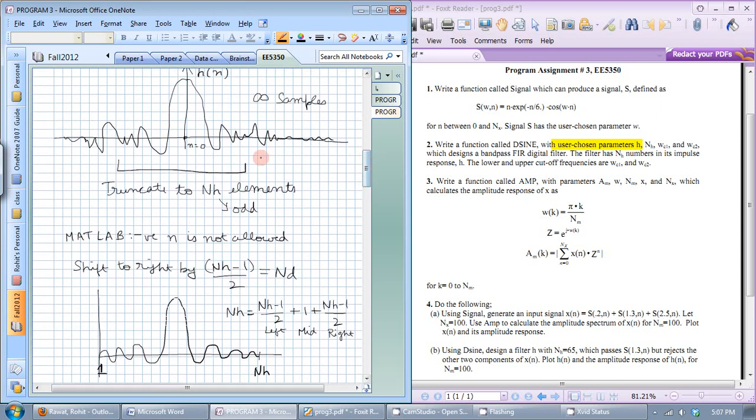So how much do we shift? In this problem, nH is the length of H. Usually, if you go by convention, we define H having nH plus 1 elements. But nH is actually the length of H. And nH will always be odd because it is supposed to be symmetric and it has to have a value at time 0.